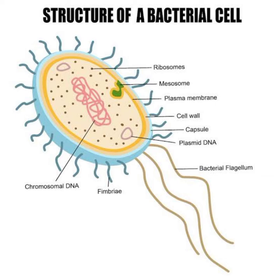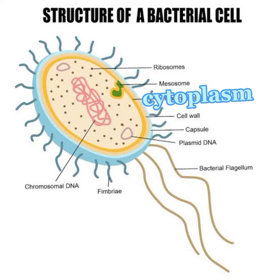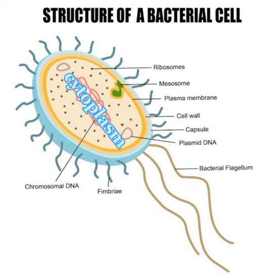Inside the cell wall is the cell membrane or plasma membrane, which is also made up of a lipid bilayer and proteins, like in plant and animal cells. Inside the plasma membrane is the cytoplasm, which is a jelly-like matter containing enzymes, nutrients, water, and different organic molecules.